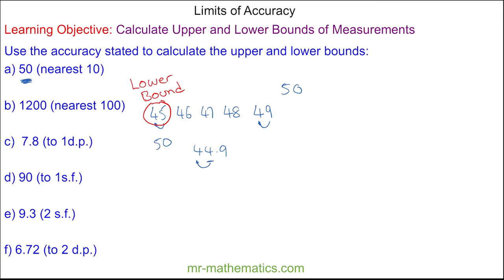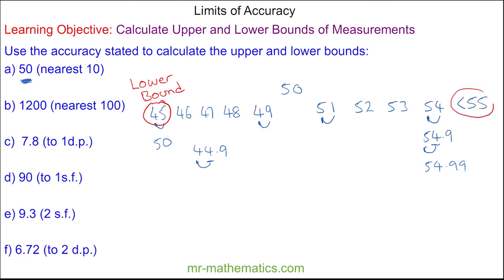We can work out the upper bound. It could have been 51, because the 1 unit would not change the 5 tens to a 6. It could have been 52, 53, 54 — again, the 4 units would not change the 5 tens into a 6. It could even have been 54.9 or 54.99, for the same reason. So the maximum it could have been has to be less than 55, and this is called the upper bound. We can write these limits of accuracy using an inequality where the number 50, which we call x, satisfies: 45 ≤ x < 55.